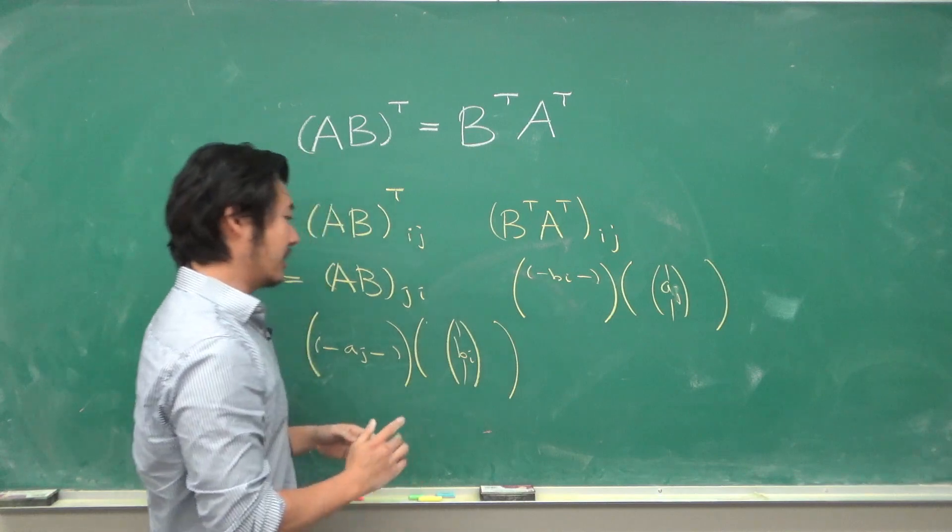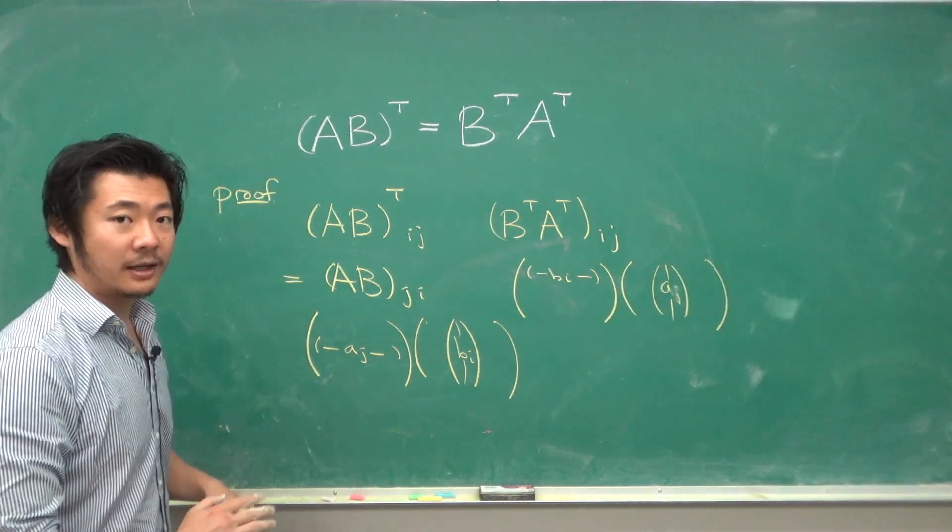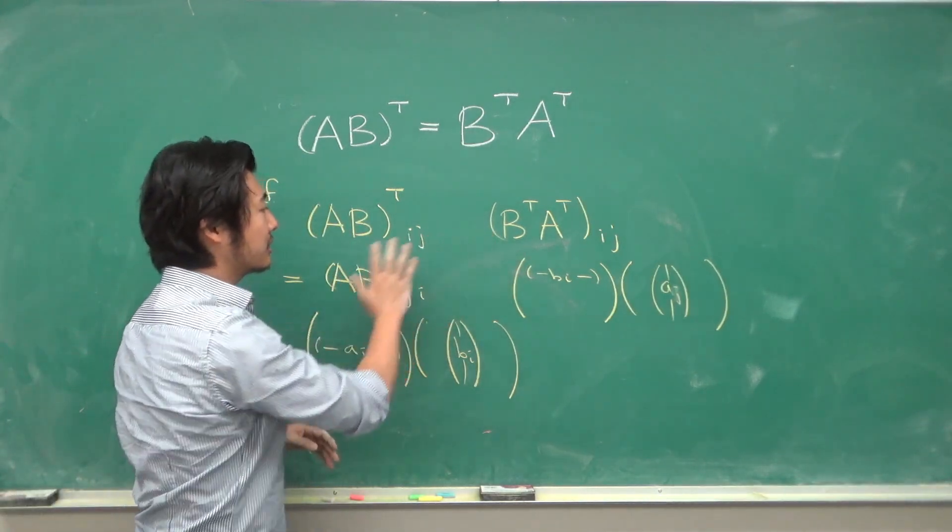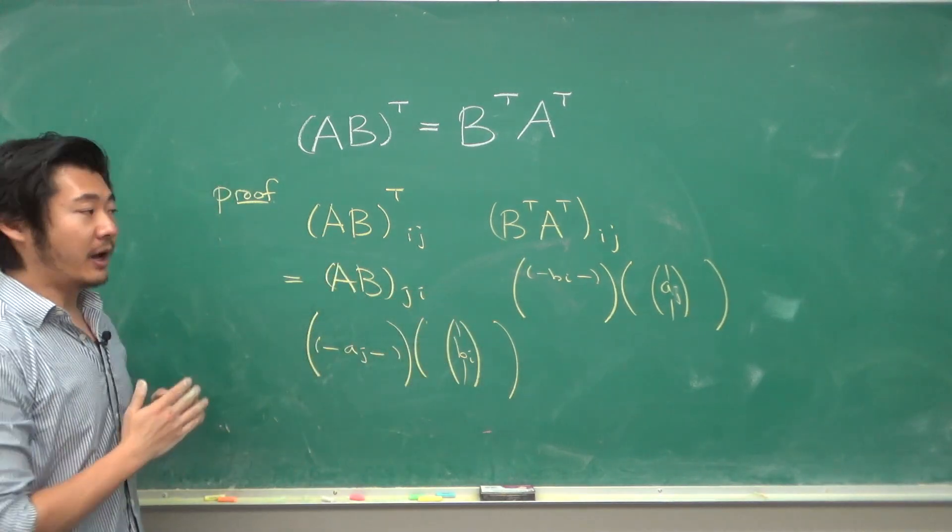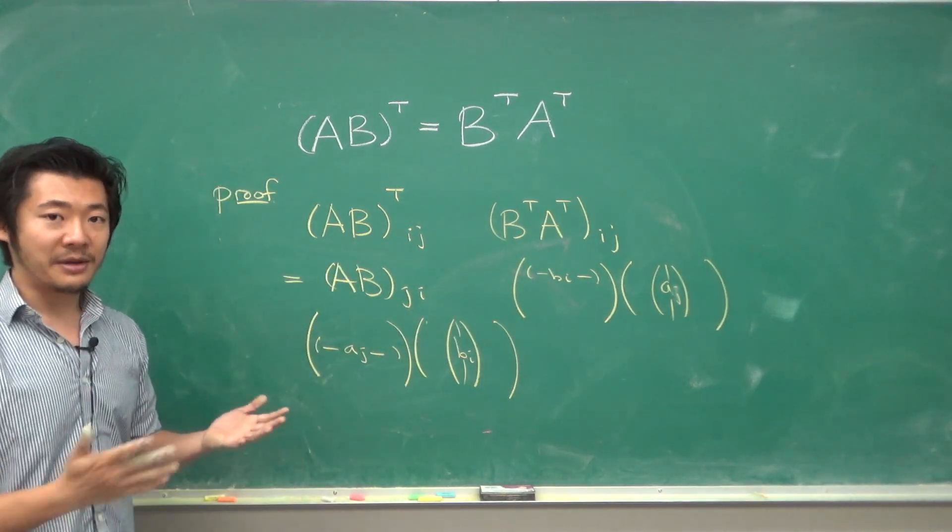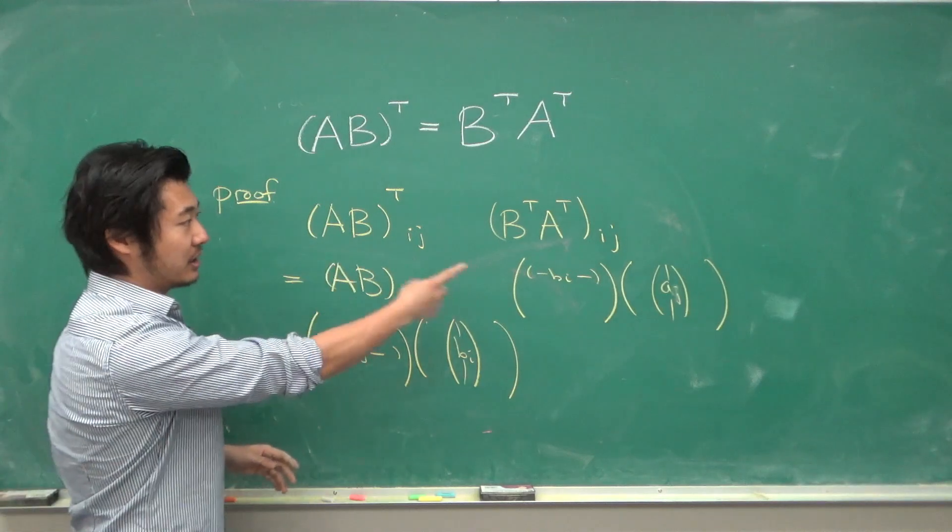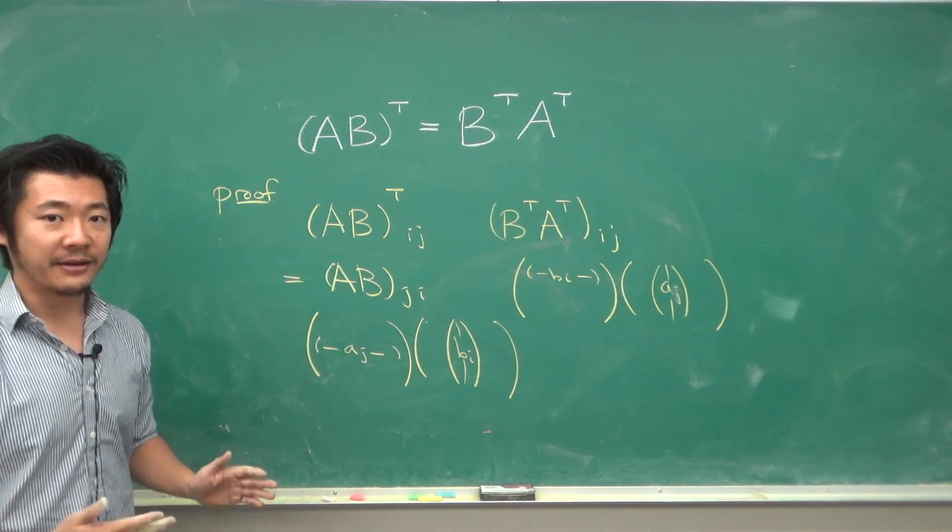We end up with the same number, and so the i-jth components of these two matrices are the same. And i and j were arbitrary, so that means each entry of these two matrices must be the same. Therefore, they are the same matrix.